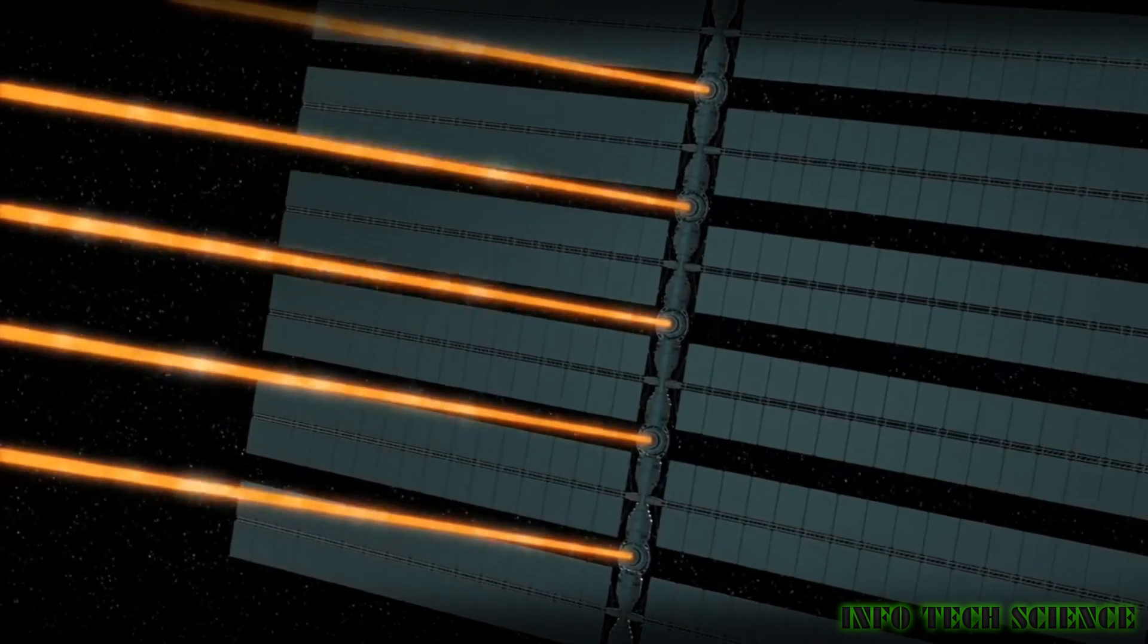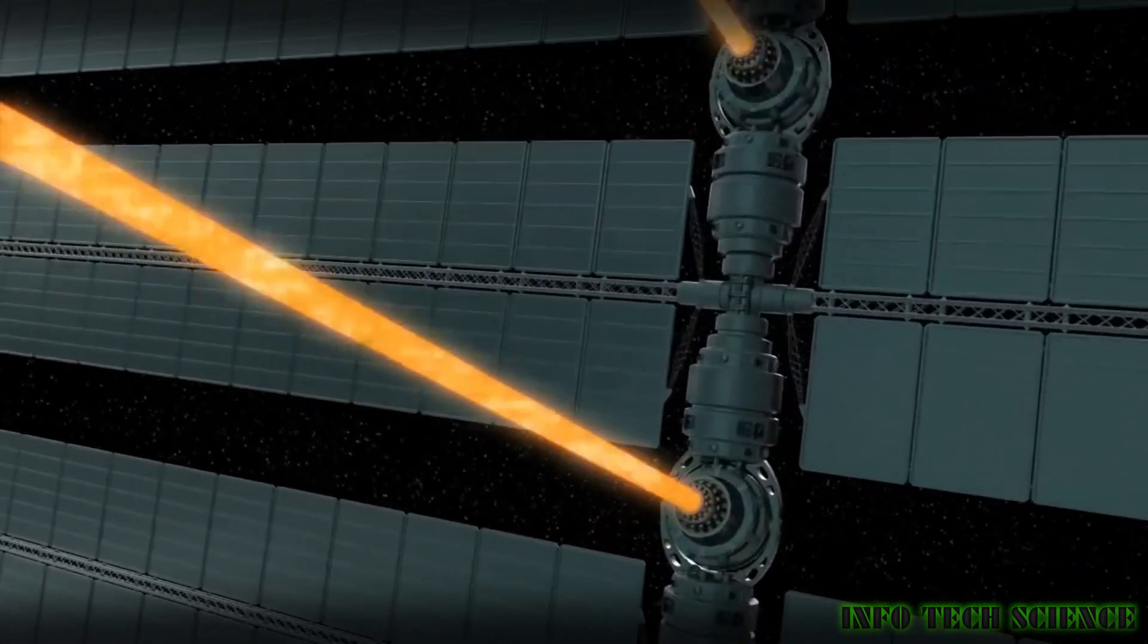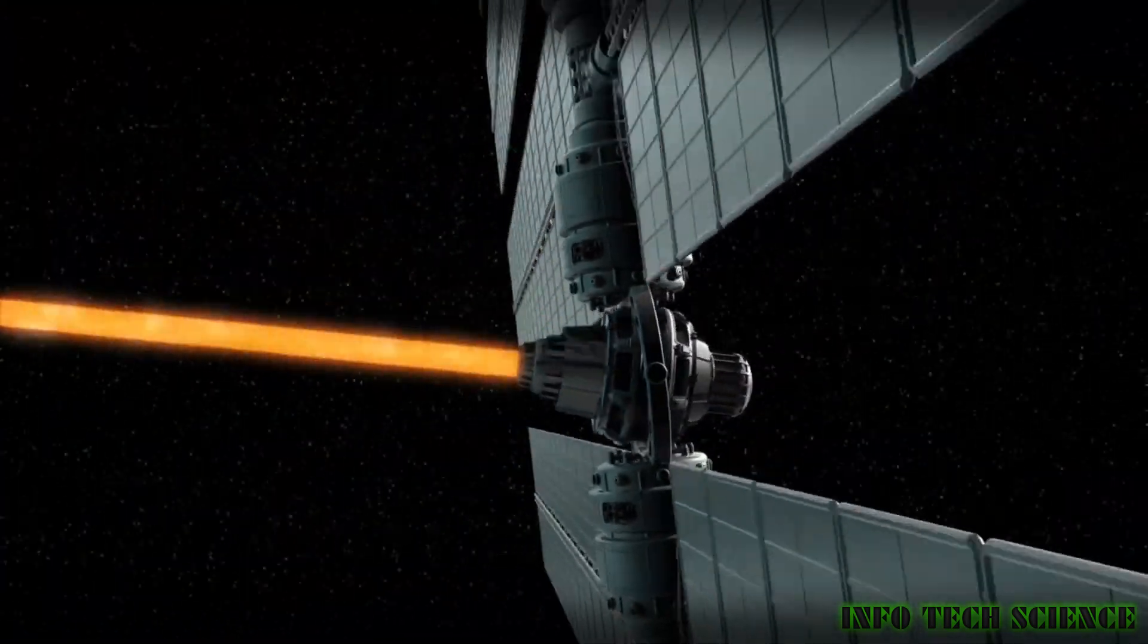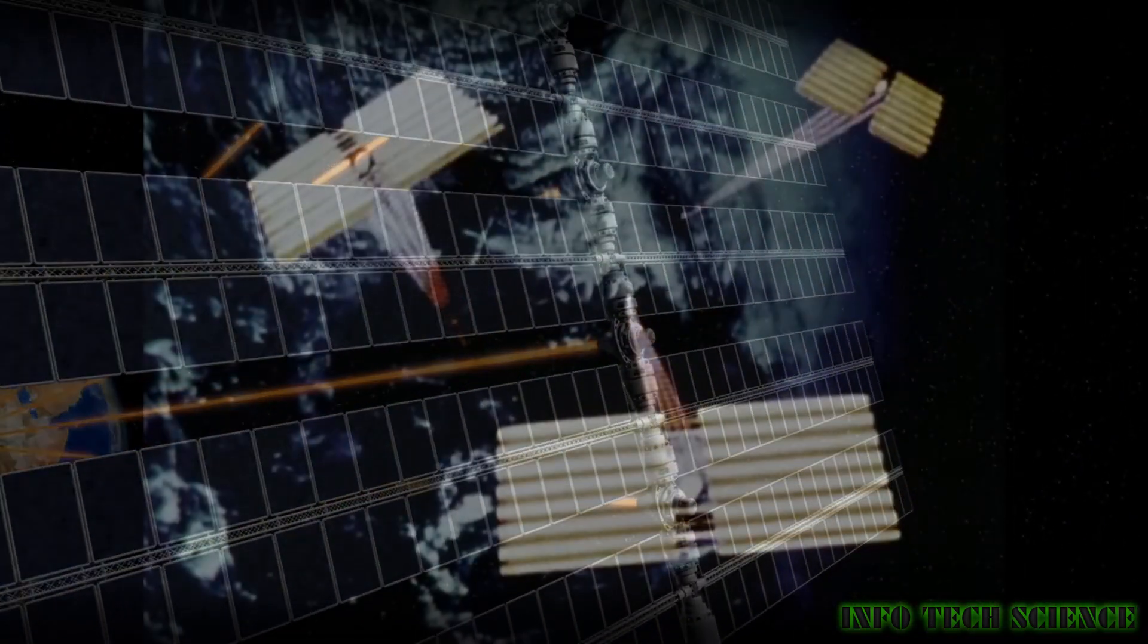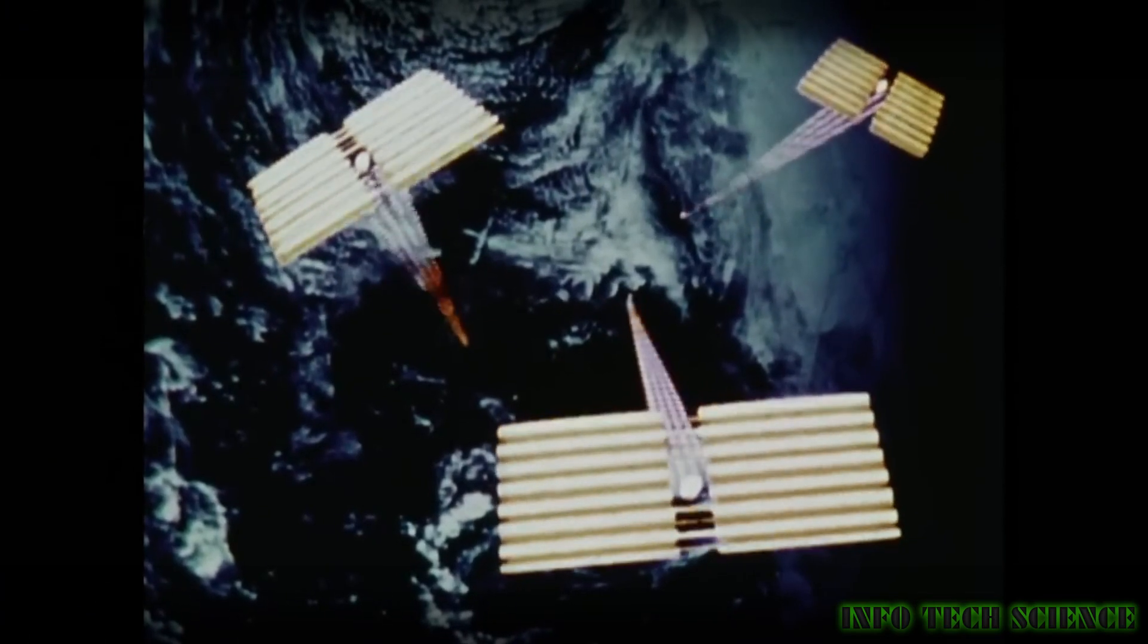Construction and assembly: building and assembling solar power satellites in space is a complex engineering task that would require robotic systems and assembly techniques specifically designed for space applications.